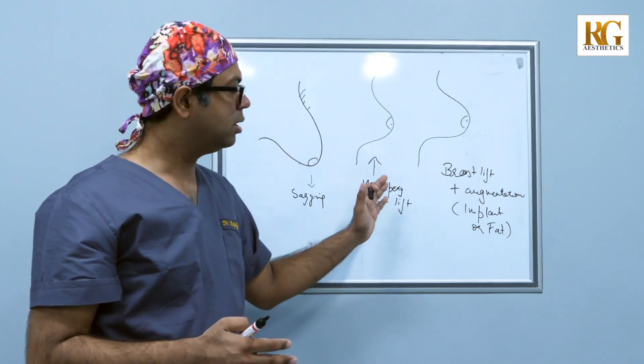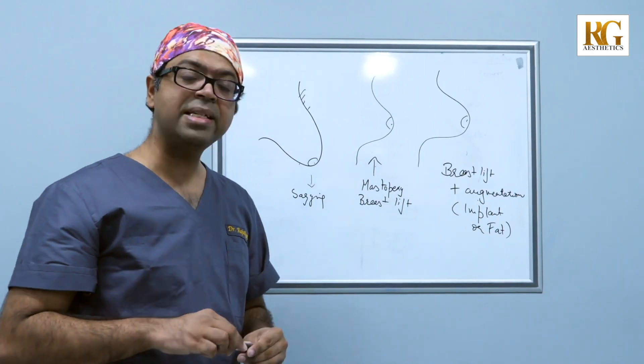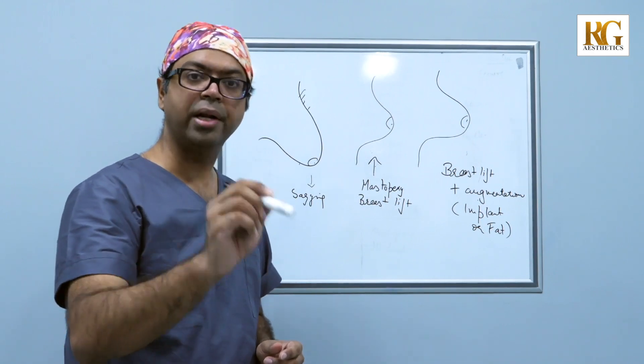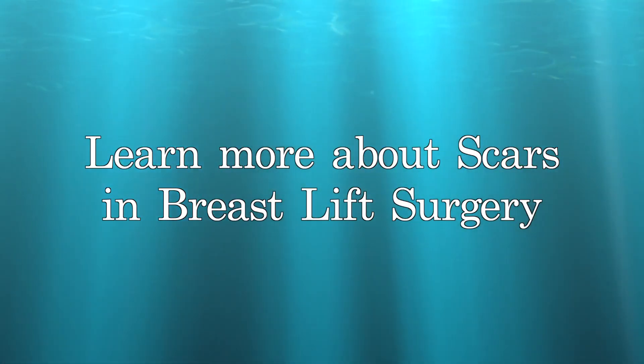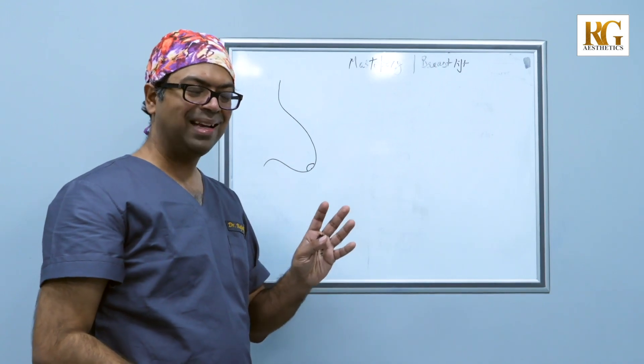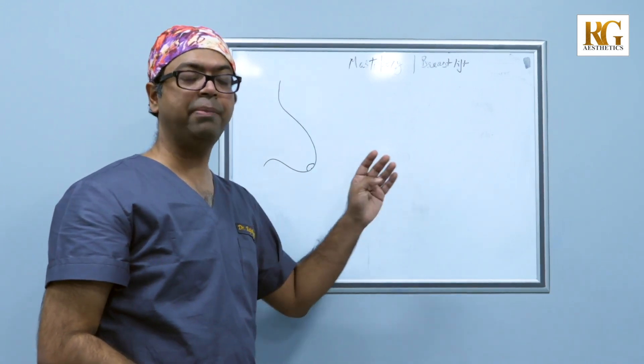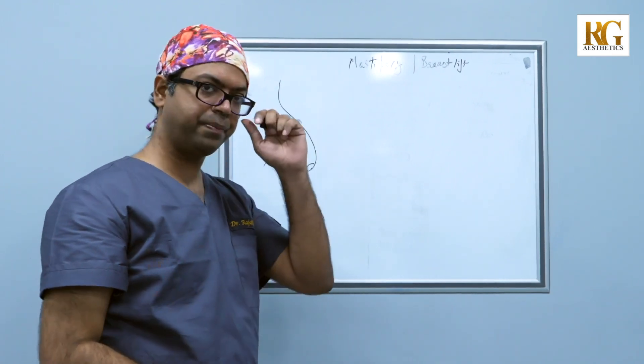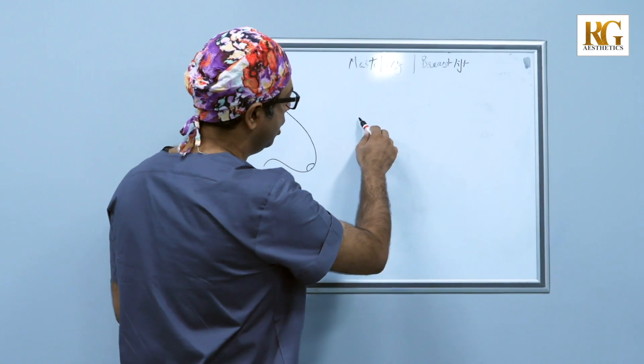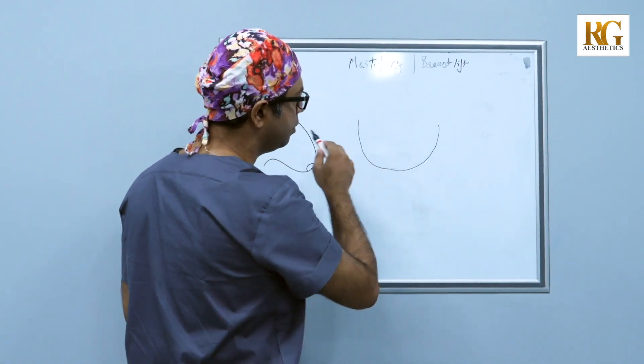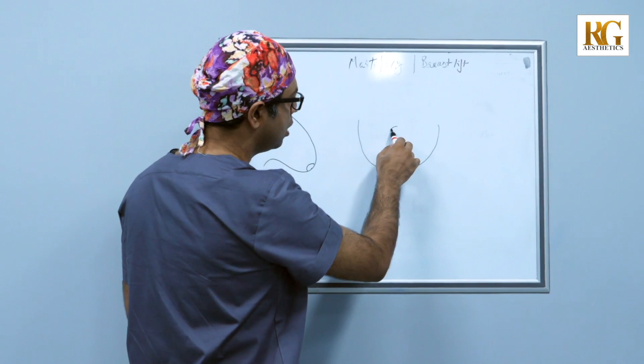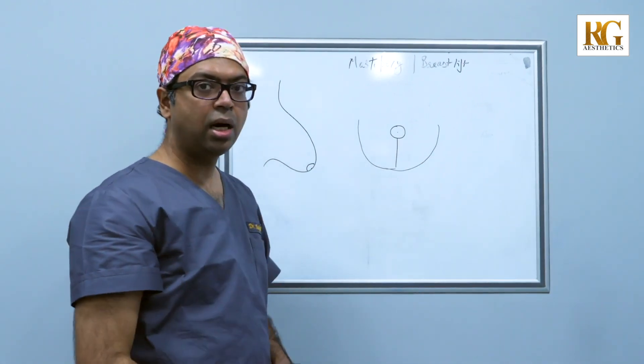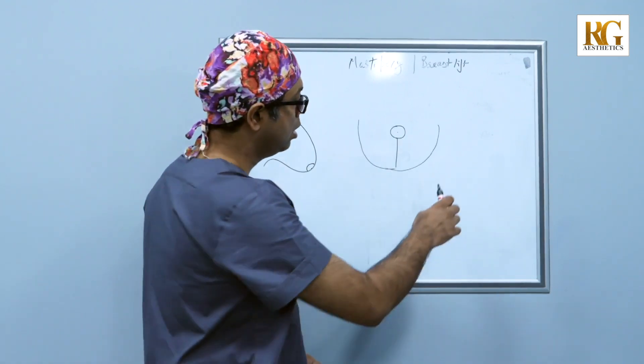This surgery has some scars. Let's talk about the recovery and the scars now. So we are talking about the scars involved to lift a sagging breast or scars which we give to do a mastopexy surgery. Now if you see the breasts from the front, this is the scar a woman gets in a breast lift surgery.